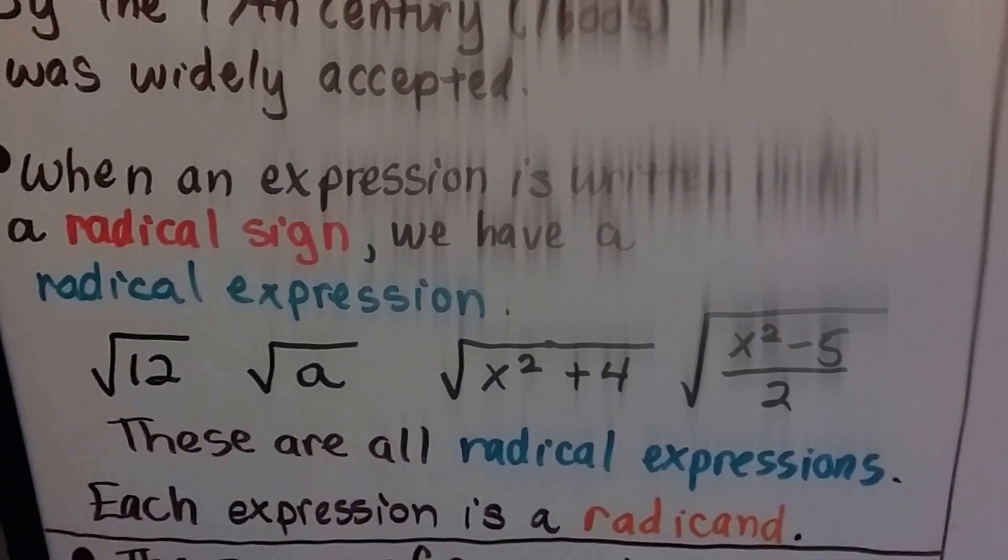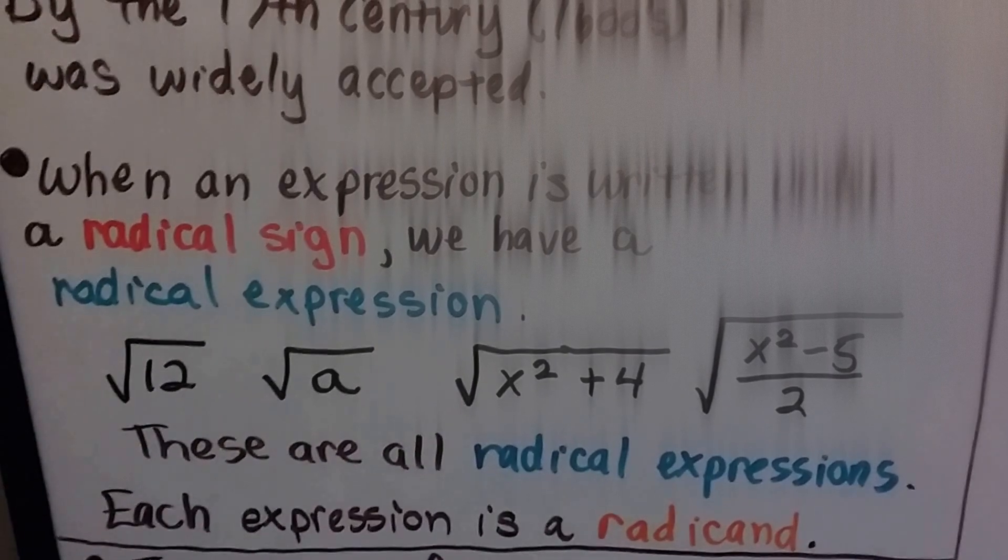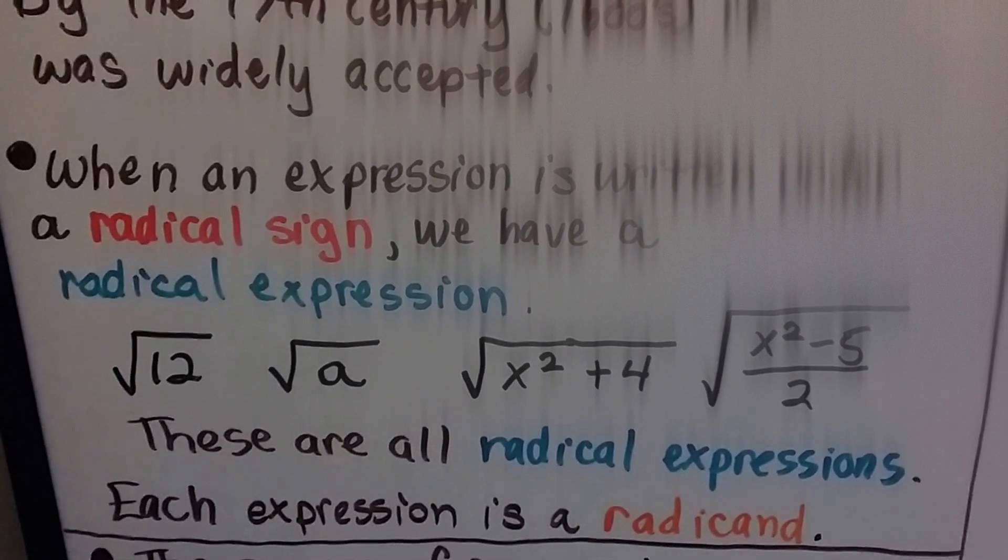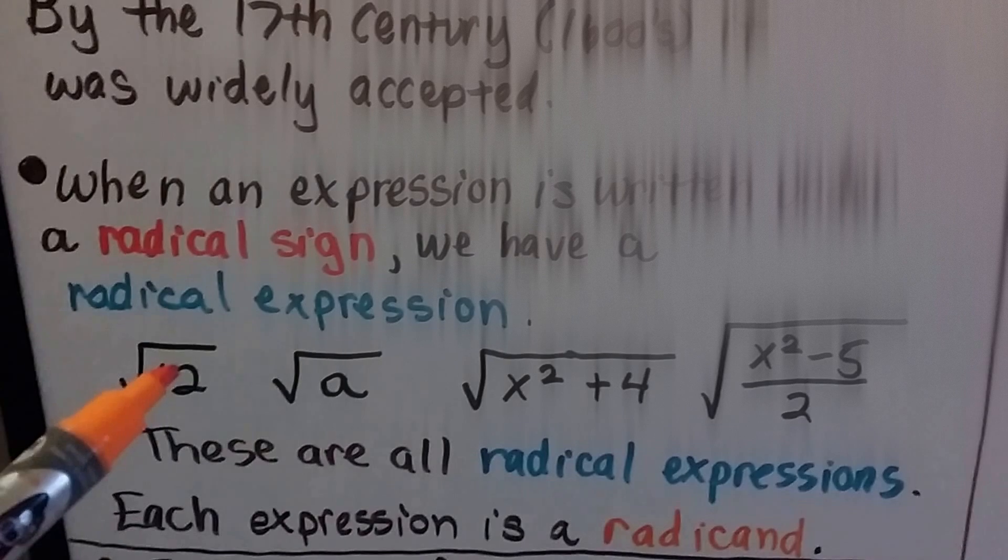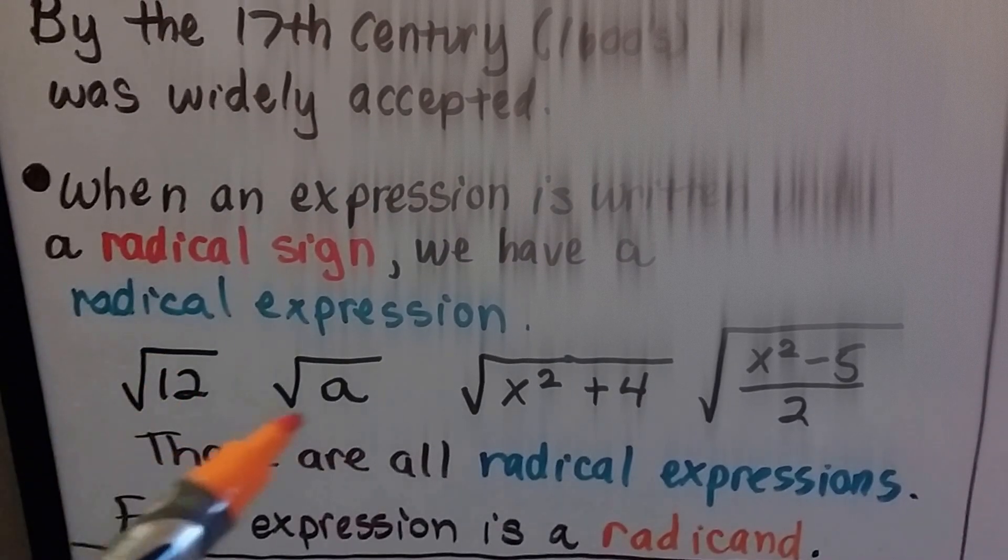When an expression is written under a radical sign, we have a radical expression. These are all radical expressions. They're all radicands. So you can see we have a standalone number under it. That's a radicand.